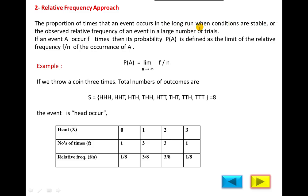If you throw a coin or a dice many times, there are possible outcomes such as head or tail, or 1 through 6, and how many times each occurs is called frequency. The observed relative frequency of an event in a large number of trials is the probability. If an event A occurs f times out of n trials, the probability of event A is defined as the limit of the relative frequency f/n.